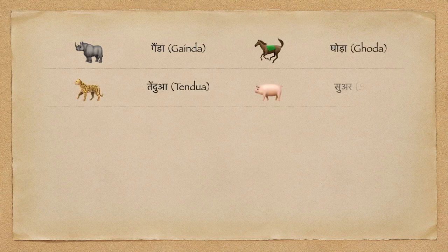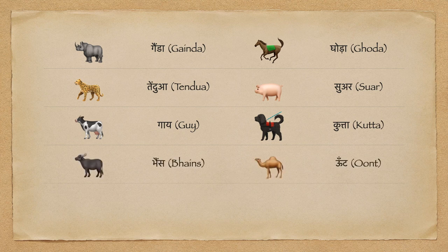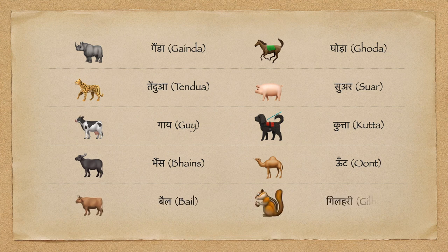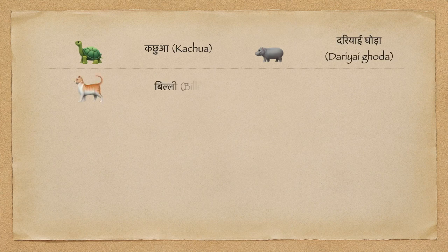Tendwa. Kutta. Bhains. Oont. Bail. Gilheri. Kachua. Dariai Ghoda. Billi. Ood Bilav.